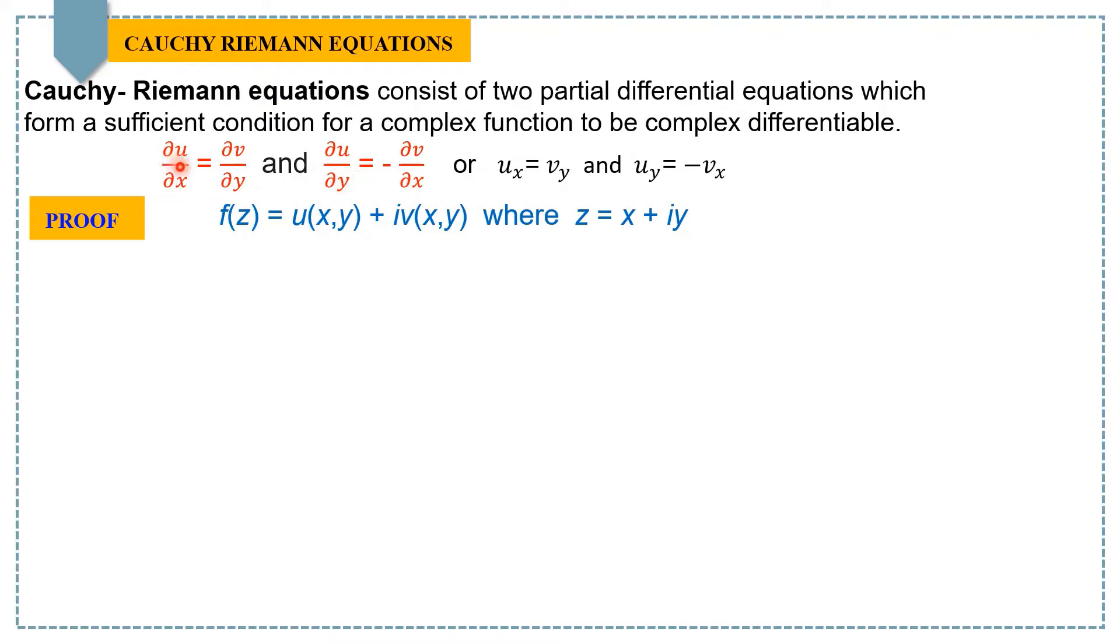The first condition is ∂u/∂x = ∂v/∂y, and the second is ∂u/∂y = -∂v/∂x. The first condition can also be written as uₓ = vᵧ, and the second condition can be written as uᵧ = -vₓ.